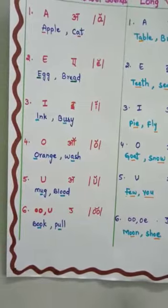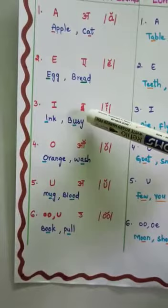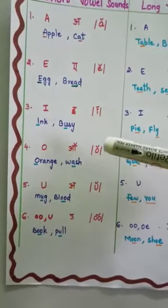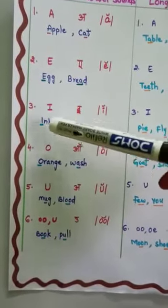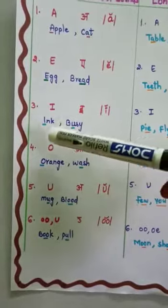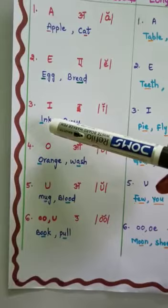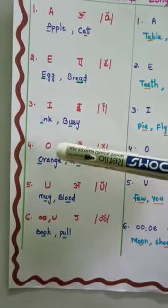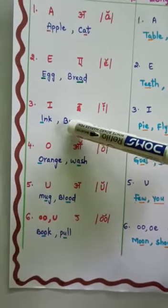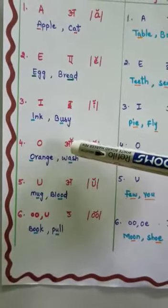The third is I. I makes the sound /ɪ/ in the short vowel sound. Examples: ink and busy. Ink makes the /ɪ/ sound. In the word busy, B-U-S-Y, the U makes the sound /ɪ/ here — busy.